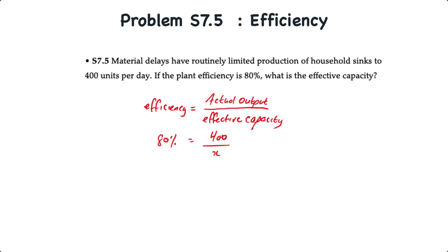We're going to use algebra here again. We're going to set 80% efficiency equal to 400 over x, where x is the effective capacity in this case. Doing a bit of cross multiplication, 0.8x is equal to 400. x is therefore equal to 400 divided by 0.8 or 500 units.